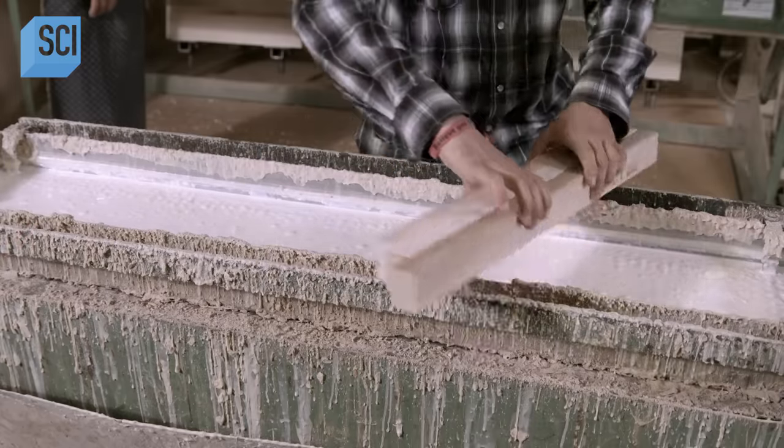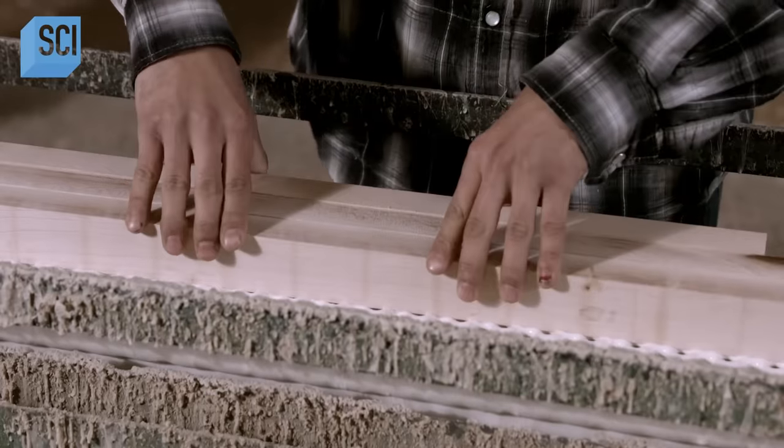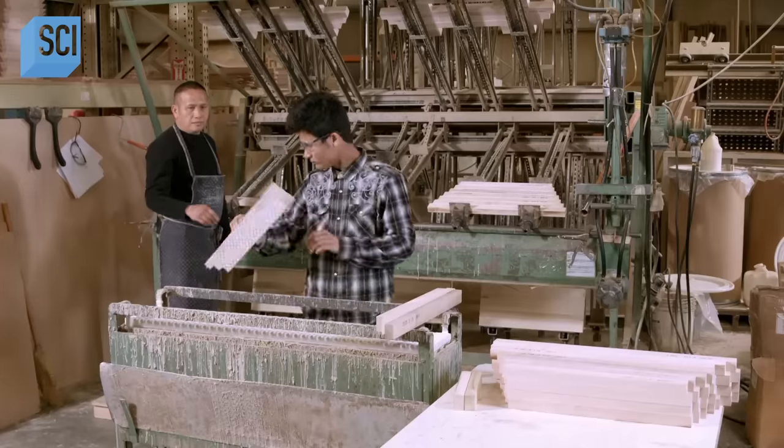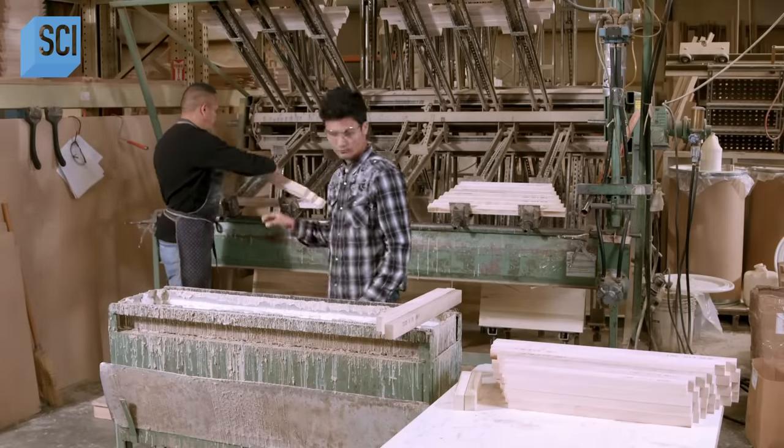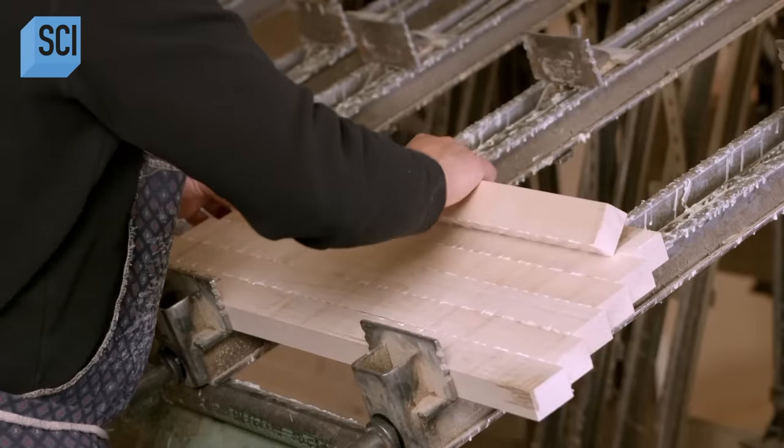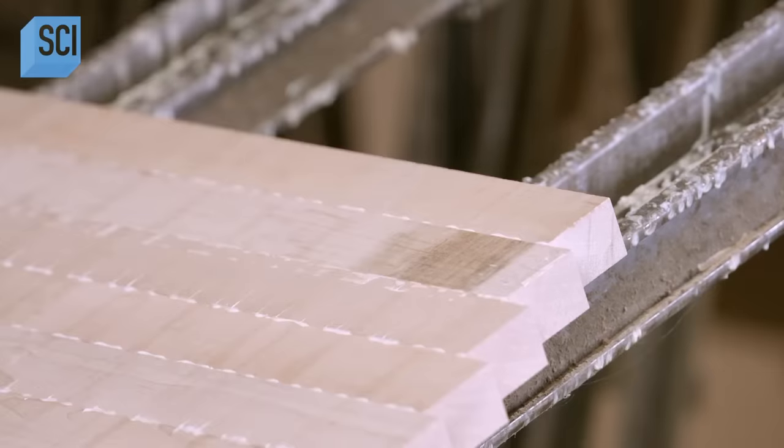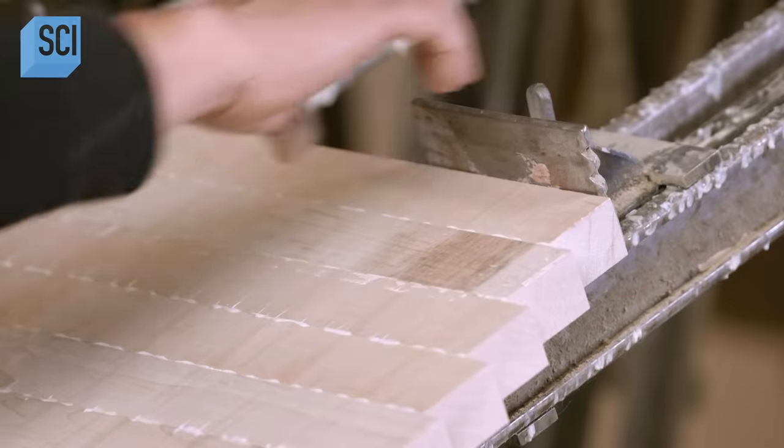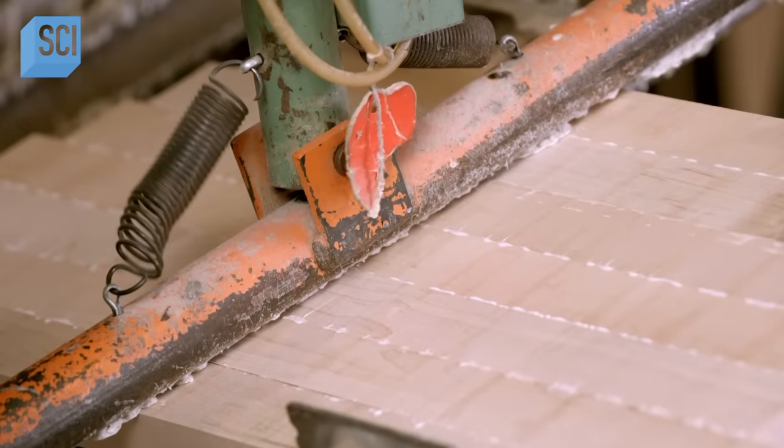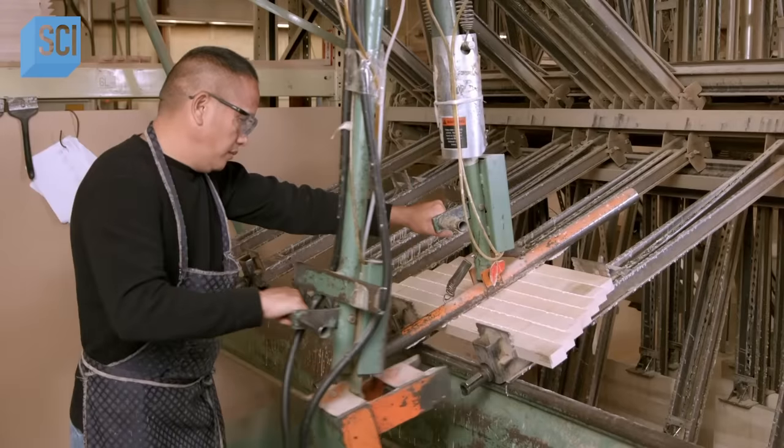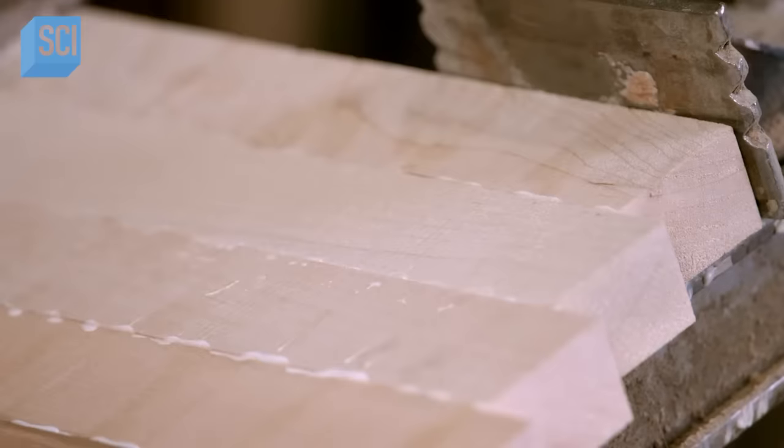The next worker dips one side of the strips in polyvinyl acetate, a super strong glue. The next worker arranges the strips in a specific order, alternating the grain to balance the wood's expansion and contraction forces. He clamps them tightly together and allows the glue to set.